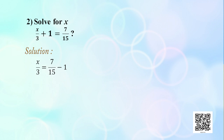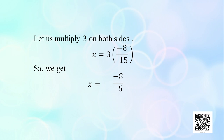For multiplication and division, the sign will not change. The given equation is x/3 + 1 = 7/15. To eliminate 1, transpose it to the RHS — it becomes −1. Therefore x/3 = 7/15 − 1. Subtracting gives x/3 = −8/15. Multiplying both sides by 3 gives x = 3 × (−8/15) = −8/5. Therefore x = −8/5 is the solution.